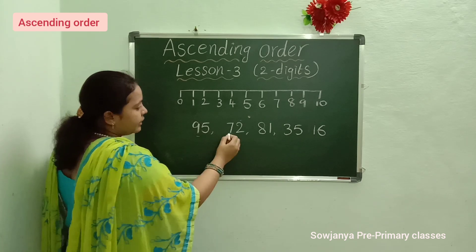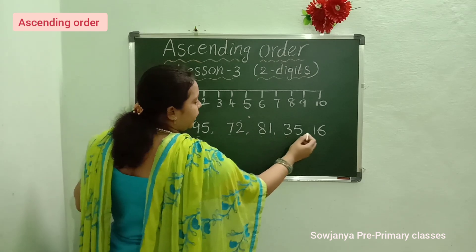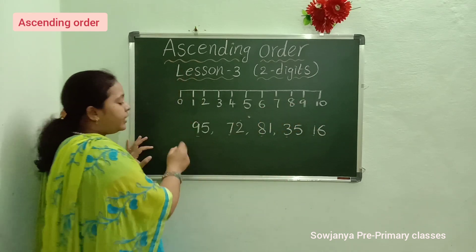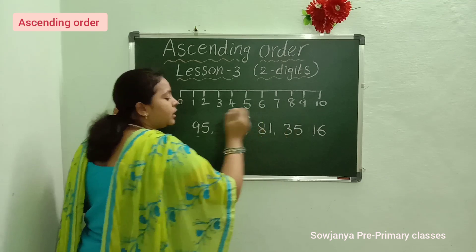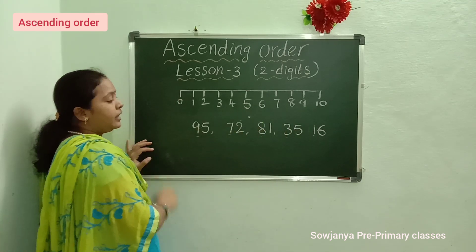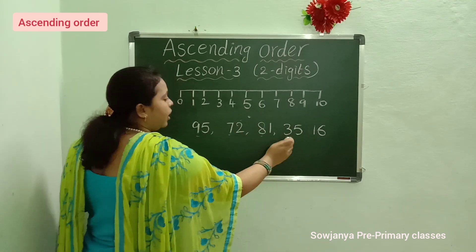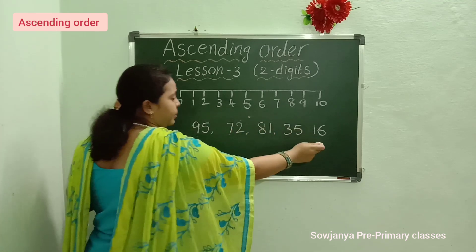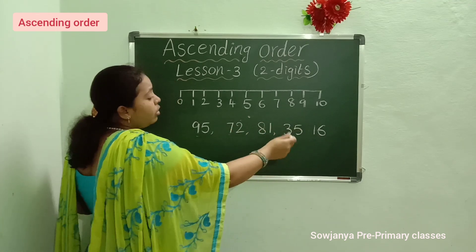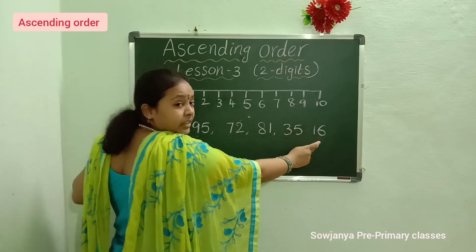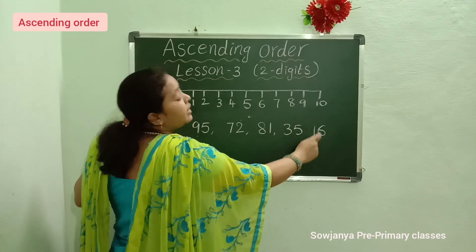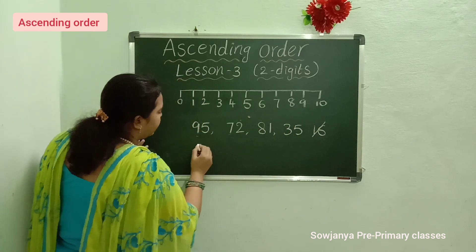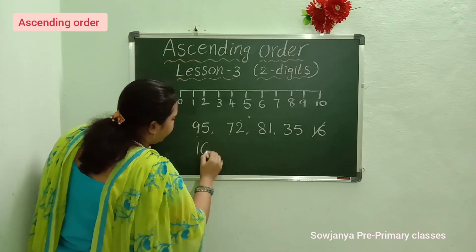In the 10's place we have: 9, 7, 8, 3, and 1. In this, which is the small number? Yes, 1. Now we know 1 is the small number. So what is the small number in all of these? Yes, 16 is the small number. Very good.